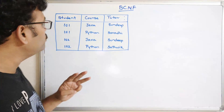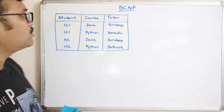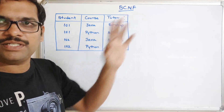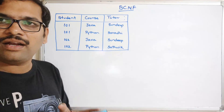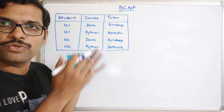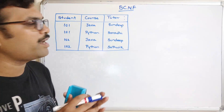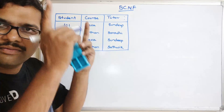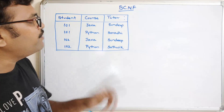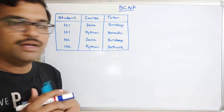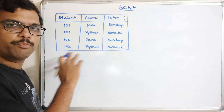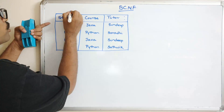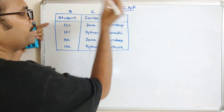This relation consists of three attributes: Student, Course, and Tutor. First we have to check whether this relation is in 3NF. In 3NF there should be no transitive dependencies for non-prime attributes. To find non-prime attributes we need to find candidate keys, and for that we need to write down the functional dependencies. I'll represent Student as S, Course as C, and Tutor as T.